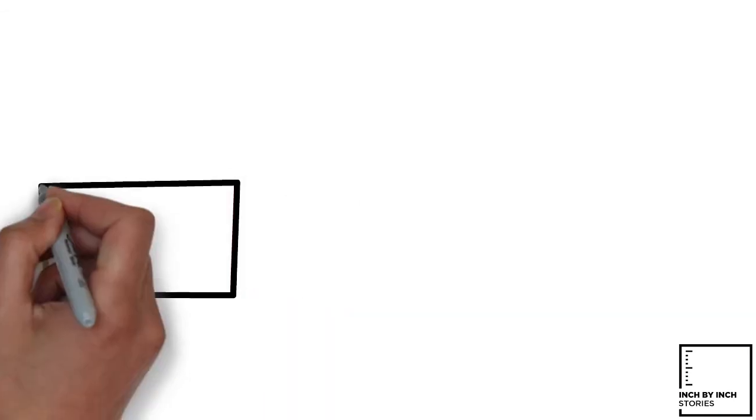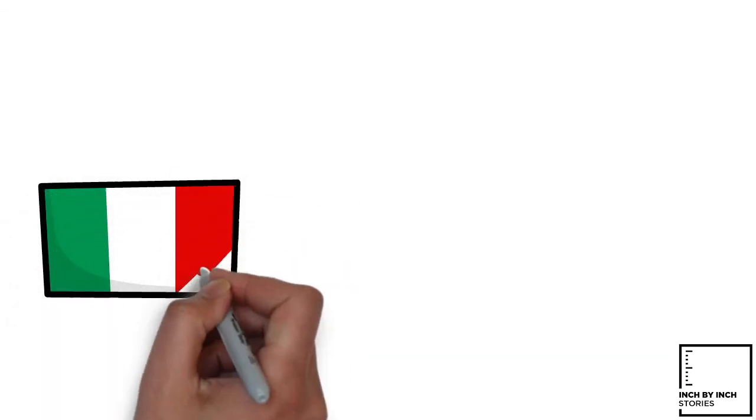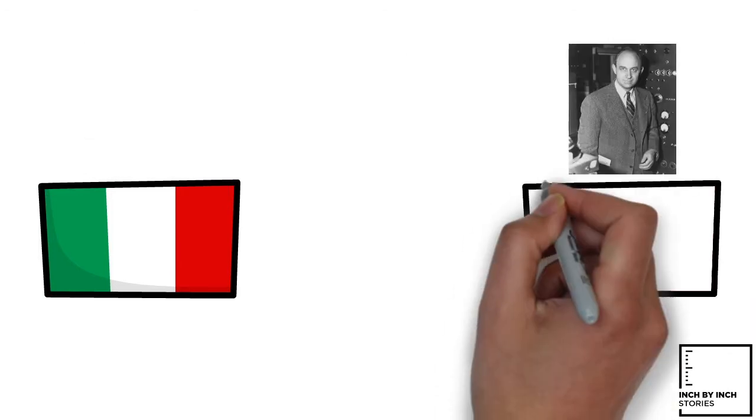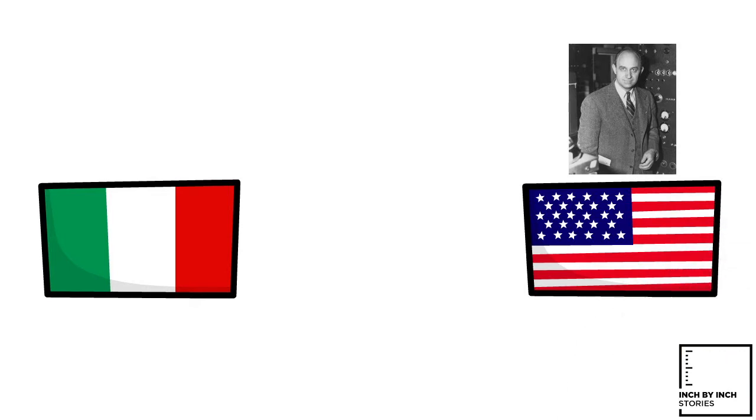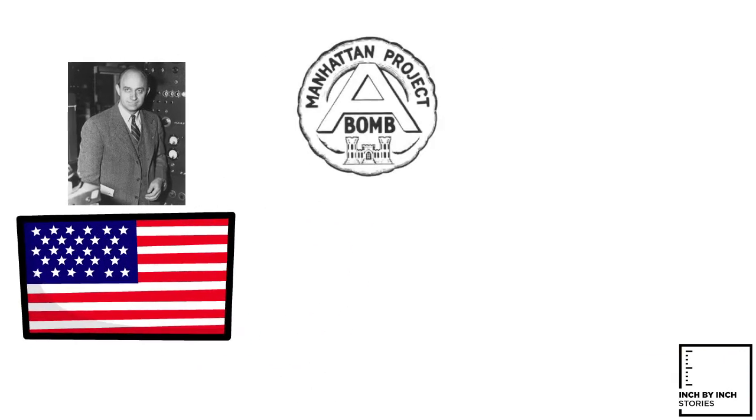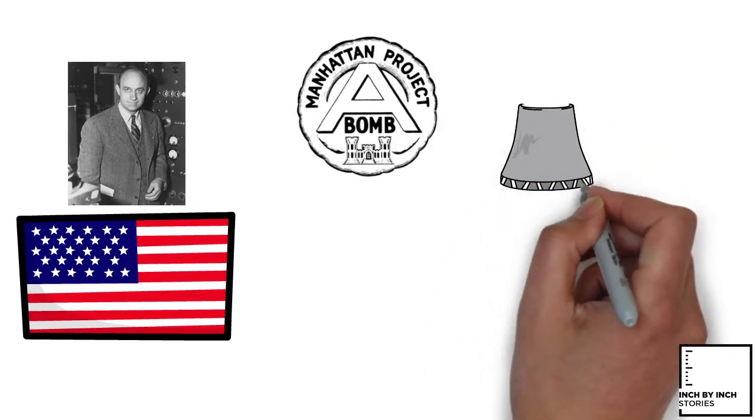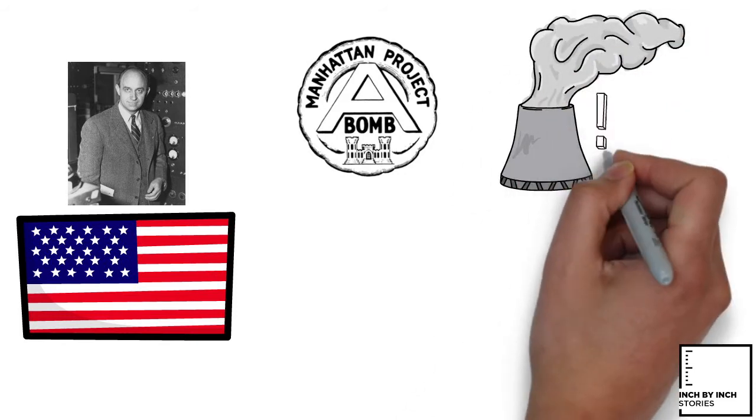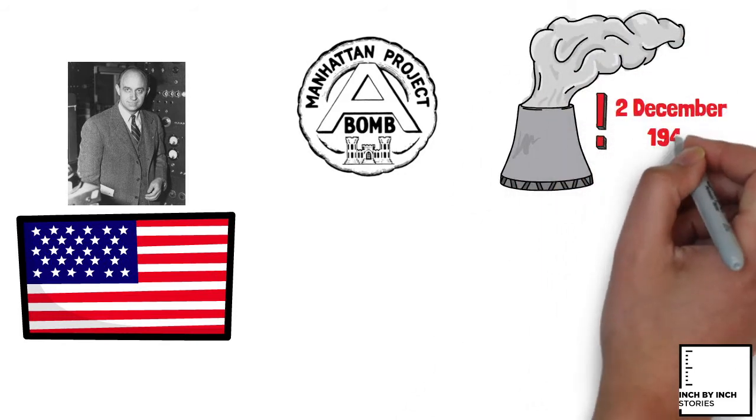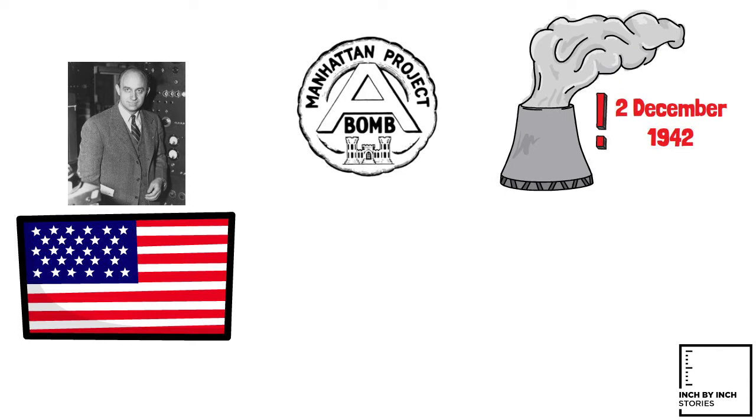Fermi left Italy in 1938 to escape new Italian racial laws that affected his Jewish wife, Laura Capon. He emigrated to the United States where he worked on the Manhattan Project during World War II. Fermi led the team that designed and built Chicago Pile-1, which went critical on December 2, 1942, demonstrating the first human-created self-sustaining nuclear chain reaction.